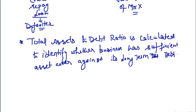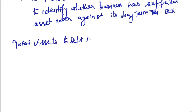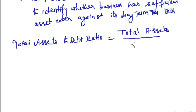So what is the formula for total assets to debt ratio? As the name suggests: total assets divided by long-term debt. We will consider only the long-term debt.